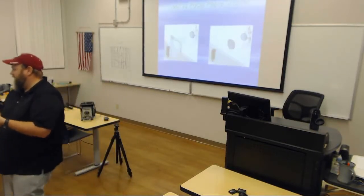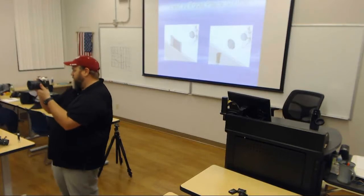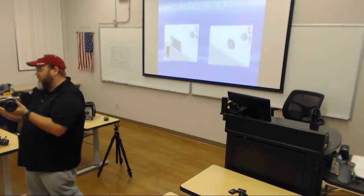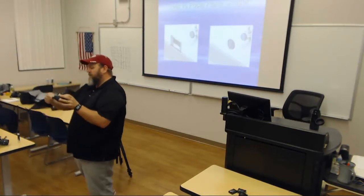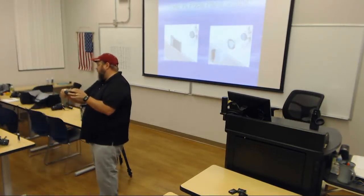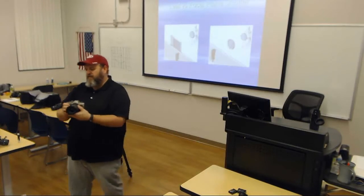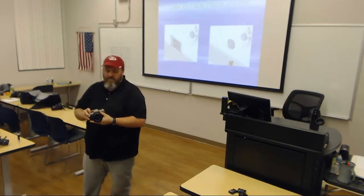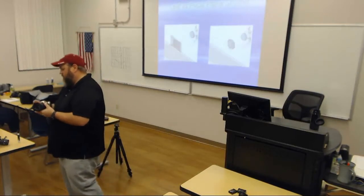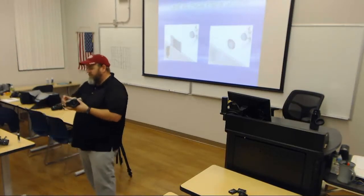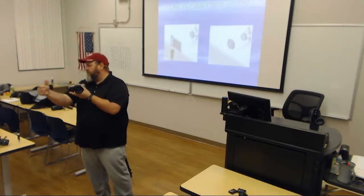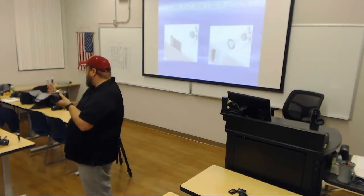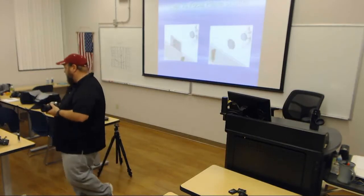When you take a photo you push the shutter release button. To take the next photo you have to advance the film. On your camera there is a black armature on the right-hand side. You flip that armature as far as you can to the right and release it — that advances the film and also resets the shutter.